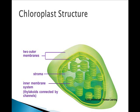Flattened sacs called thylakoids are interconnected by channels woven through the stroma. The first reactions of photosynthesis, the light-dependent reactions, happen there.